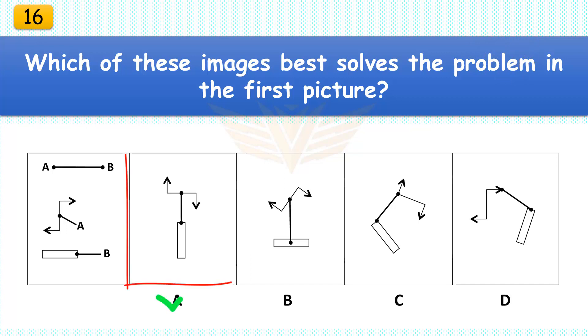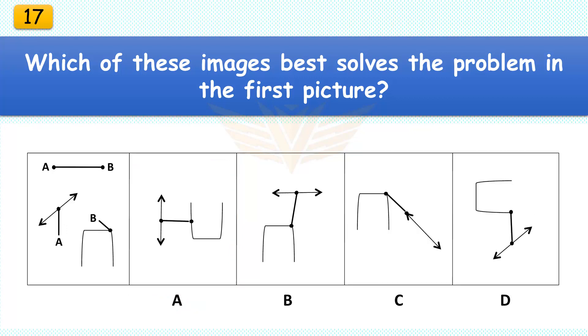Which of these images best solves the problem in the first picture? The correct answer is A. Rotate both objects 90 degrees.